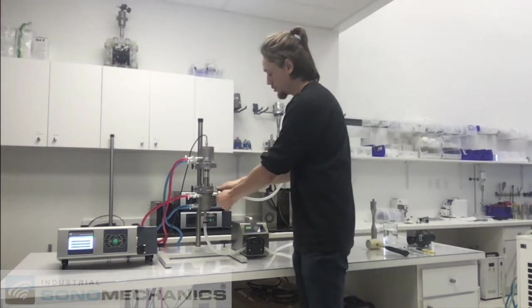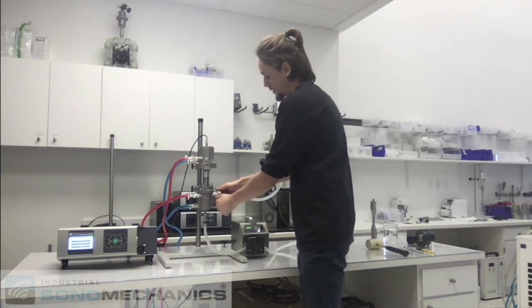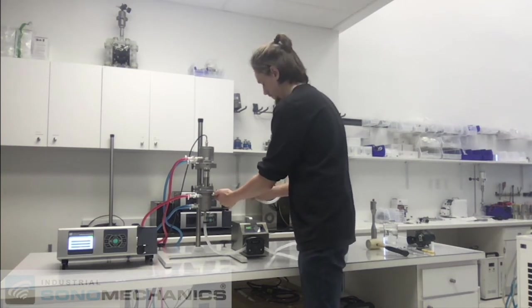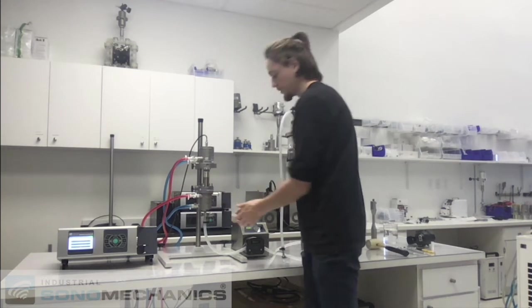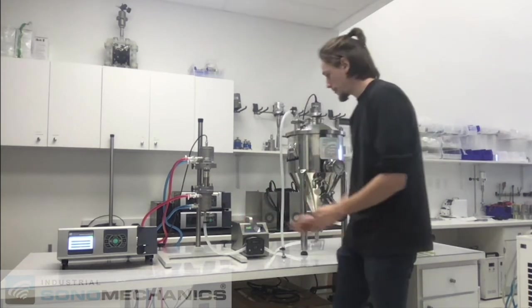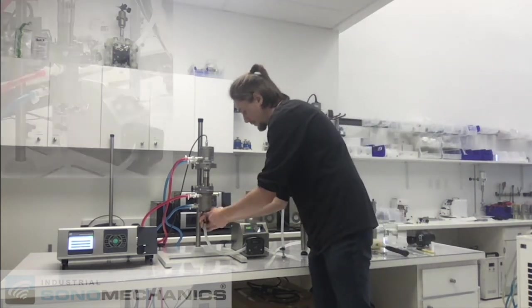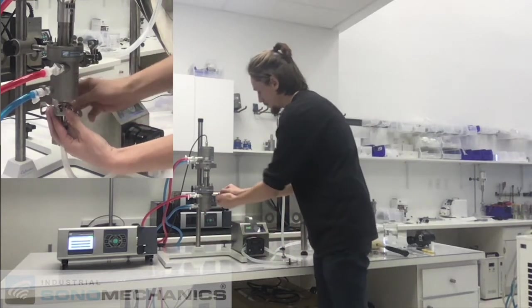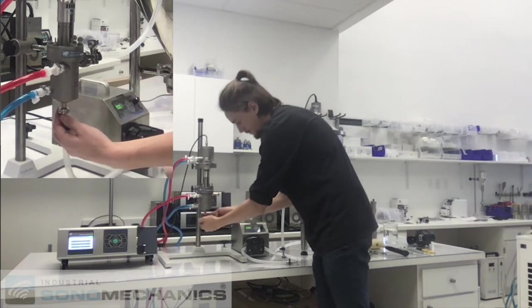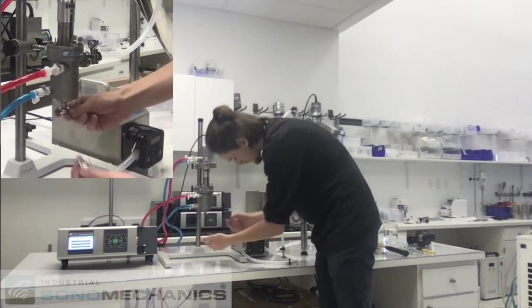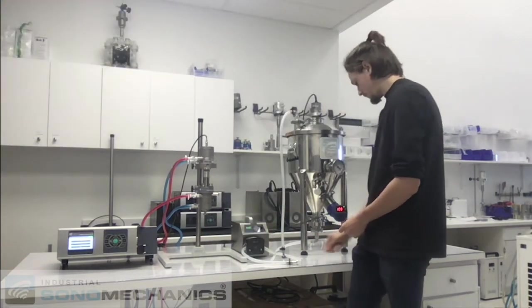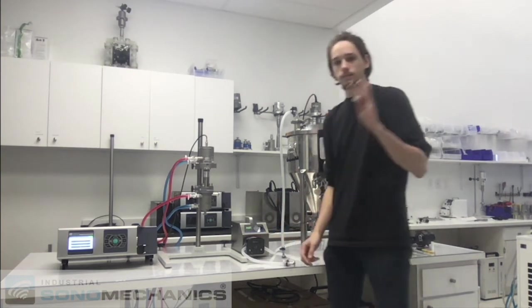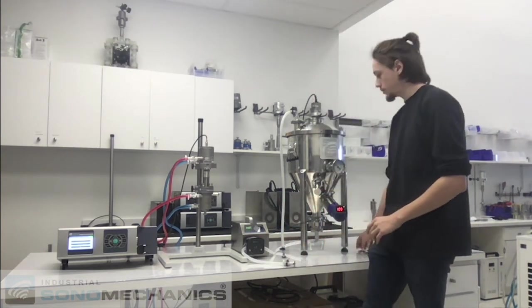Our first step is removing two sanitary clamps and set those aside. We won't need those for batch mode. Make sure you remove both sanitary gaskets. Set those aside. We won't need those anymore.